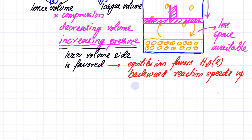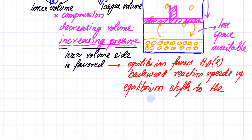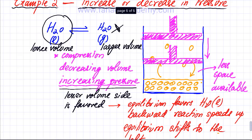So equilibrium shifts to the left. The lesser volume side is favoured, which in this case is H₂O liquid. The backward reaction speeds up and the equilibrium shifts to the left.